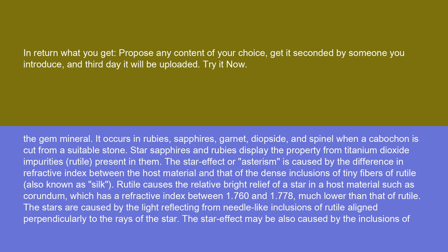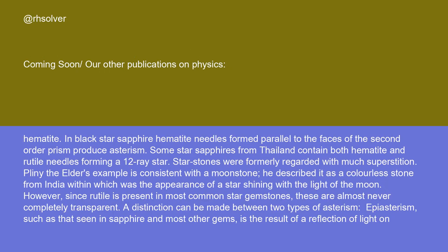The star effect may also be caused by inclusions of hematite. In black star sapphire, hematite needles form parallel to the faces of the second-order prism, producing asterism. Some star sapphires from Thailand contain both hematite and rutile needles, forming a 12-ray star.